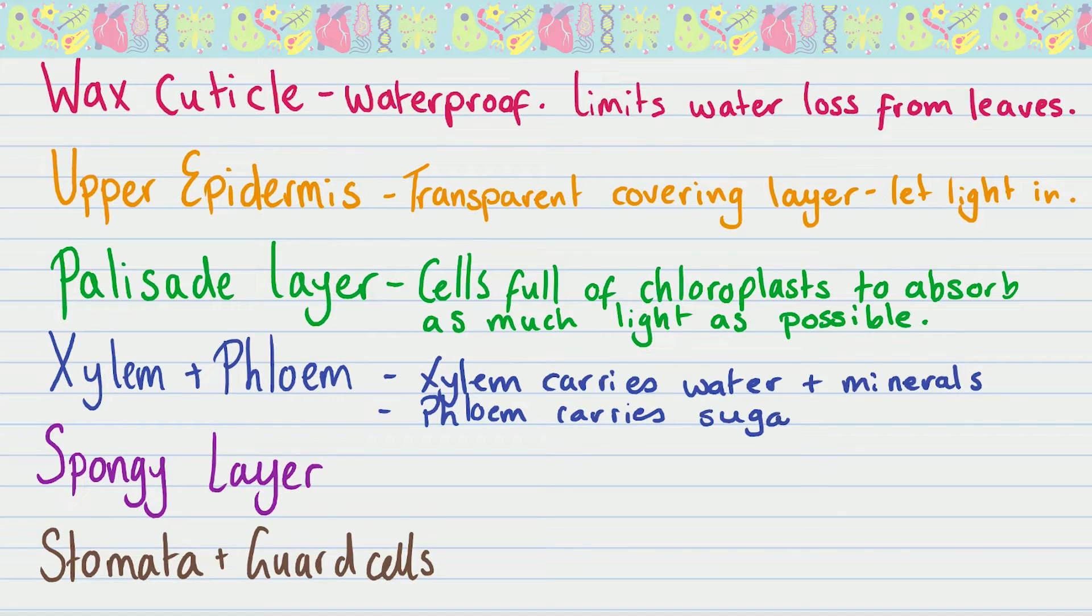You then got the palisade layer or the palisade mesophyll. These cells are stacked sort of shoulder to shoulder almost, to jam as many of them into that layer as possible to absorb as much light as possible for photosynthesis. And these cells are absolutely jam-packed full of chloroplasts to get as much of that light energy as possible and use it for photosynthesis.